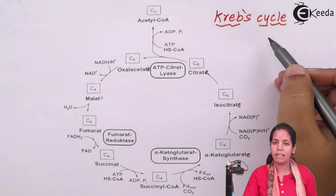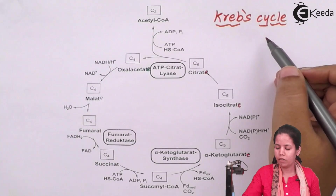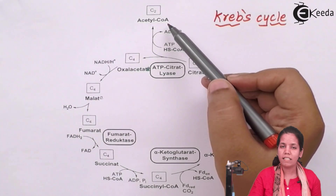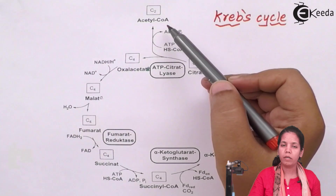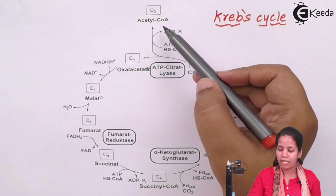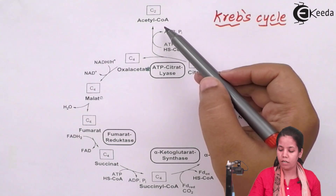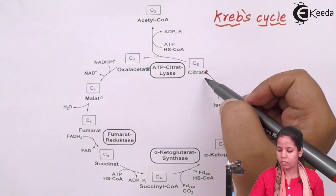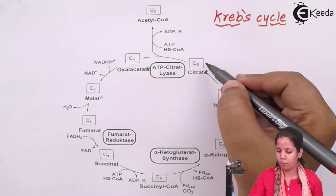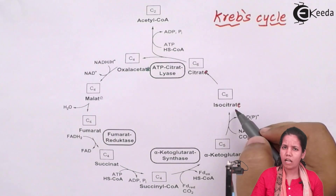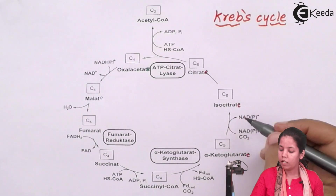This is the Krebs cycle or TCA cycle. The process actually starts with acetyl-CoA, which is formed as an intermediate product between glycolysis and the TCA cycle. After glycolysis, a set of reactions form acetyl-CoA, which is then sent to the Krebs cycle and gets converted into citrate. Citrate is a 6-carbon molecule. From citrate, the next molecule formed is isocitrate, which is again a 6-carbon molecule.